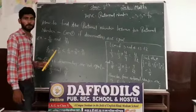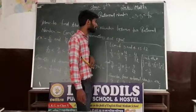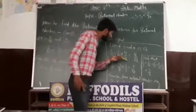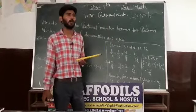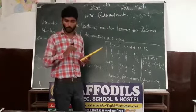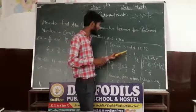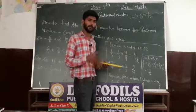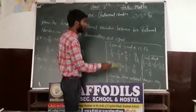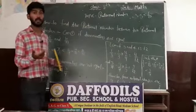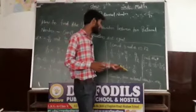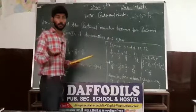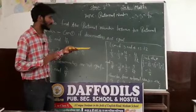The LCM of 3 and 4 — everyone knows — is 12. Now we have to change these two denominators, 3 and 4, into 12. To make 3 equal to 12, we multiply by 4, so 1/3 becomes 4/12. To make 4 equal to 12, we multiply by 3, so 3/4 becomes 9/12. Now the denominators are the same: we have 4/12 and 9/12.